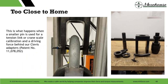Wrapping up: this is what happens when a smaller pin is used for tension link or crane scale calibration — the driving force behind our patent and kit. Our kit basically shows the pin size that should be used: small pin, large shackle — never a good idea with force measurements. Fortunately, no one died in that, and it's a few hundred dollars plus replacement cost.